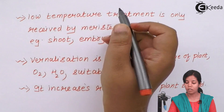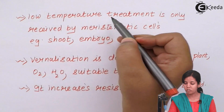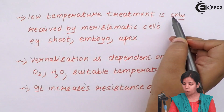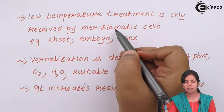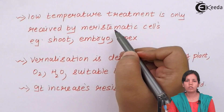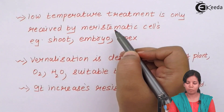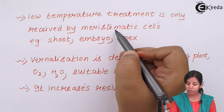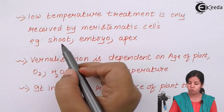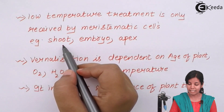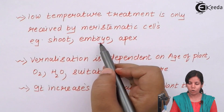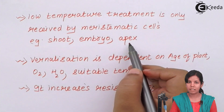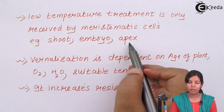During vernalization, the low temperature treatment is received only by meristematic cells — the primary, first-developed cells of the plant. Meristematic tissue is present in the shoot, that is the stem, embryo, the cotyledon region, and the apex — the apical bud.